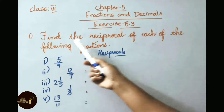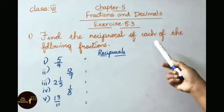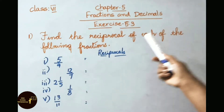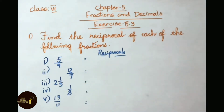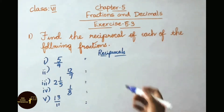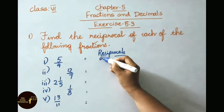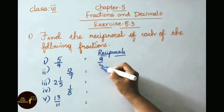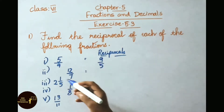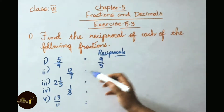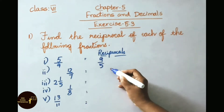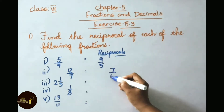See the first question now. Find the reciprocal of each of the following fractions. See the first one: 5 by 9. Reciprocal of 5 by 9 is 9 by 5. See the second sum: 12 by 7. Reciprocal of 12 by 7 is 7 by 12.